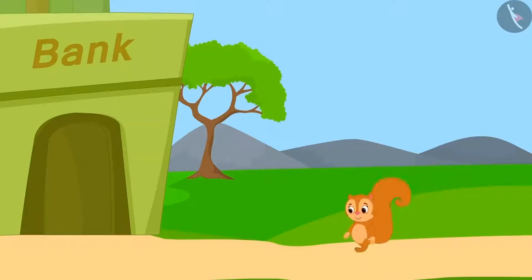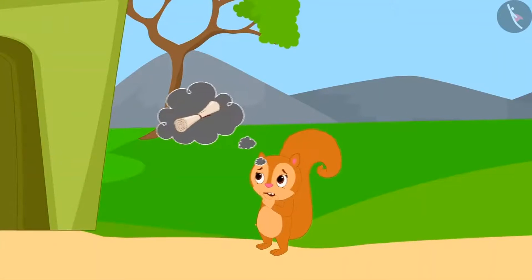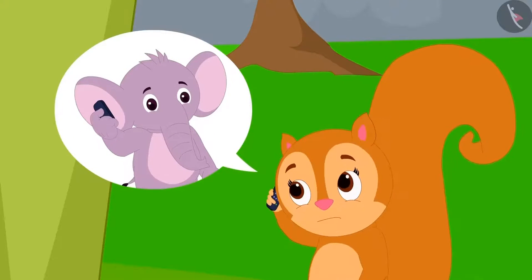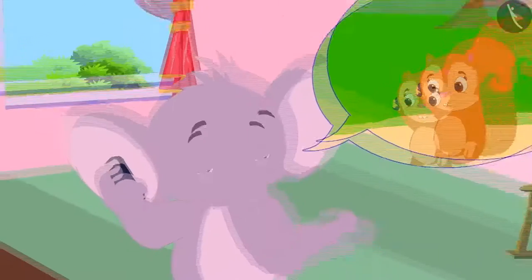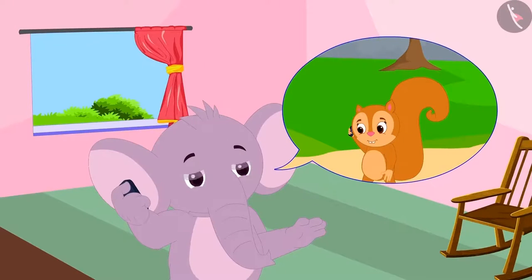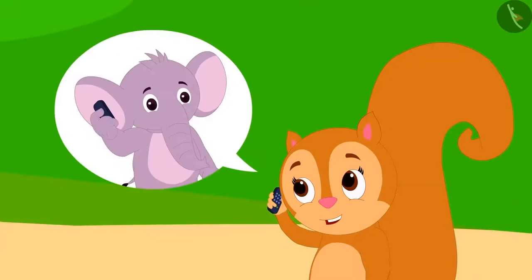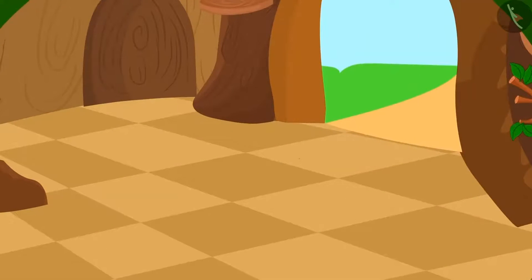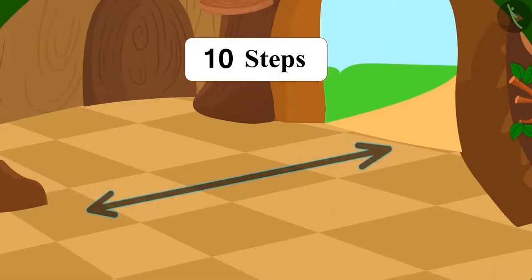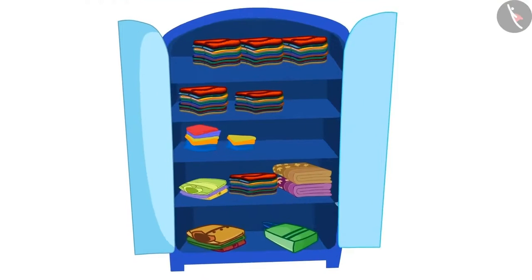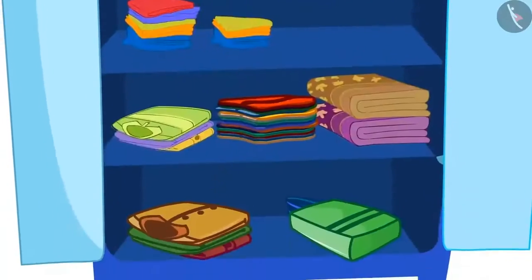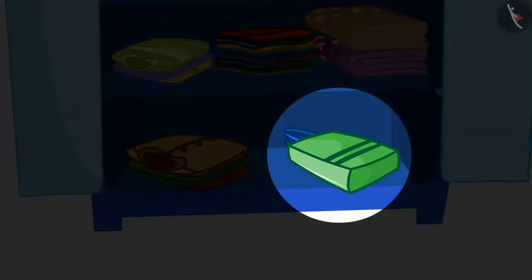Today, Chanda has gone to the bank for some important work, but she has forgotten some important documents back home. She immediately called Appu and asked him to bring the papers from her house. Appu asked her where he would find the papers. Chanda told him that as soon as he opens the main door and enters the house, he has to walk ten steps straight towards a blue cupboard. He will find the papers in the lowermost shelf of the cupboard in a packet.